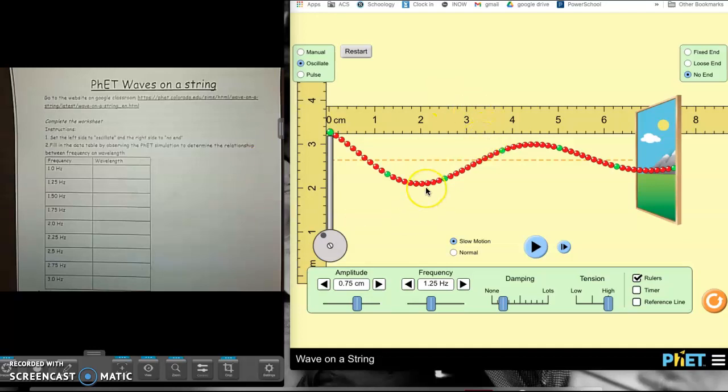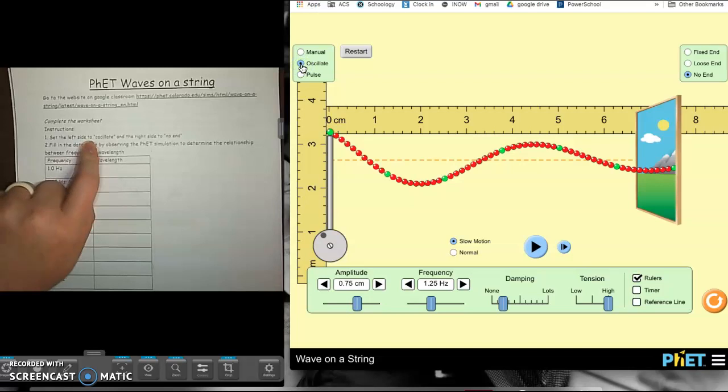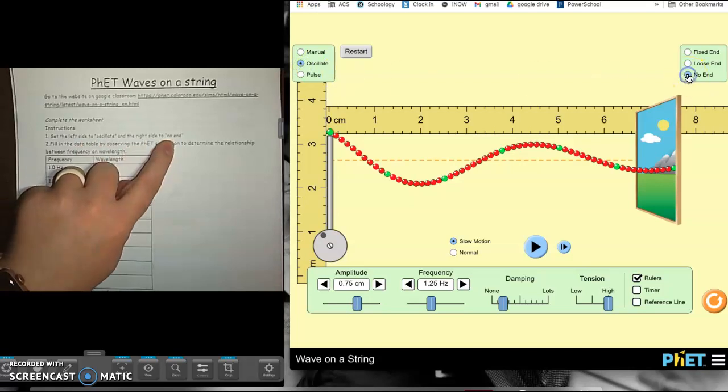We're going to set ours up like our instructions tell us to do. So it says on the left side, select oscillate. So right here, you need to select oscillate. Then on the right side, it says click no end. So no end, you should see a picture come up right here.